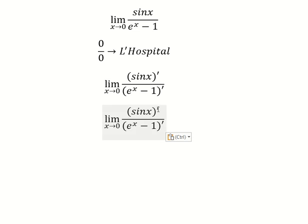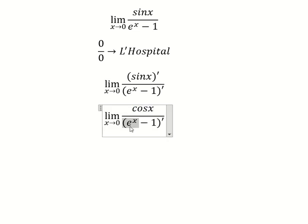So this one we have cosine x. This one we have e to the power of x, and we get zero.